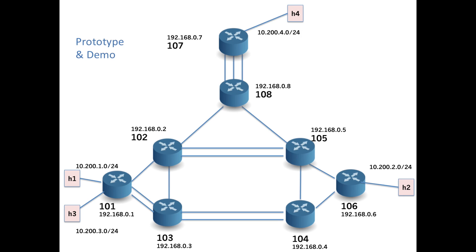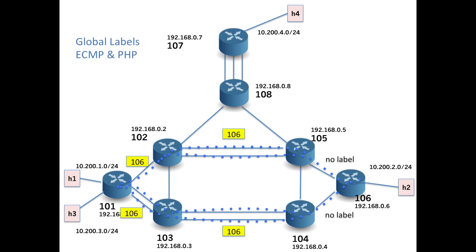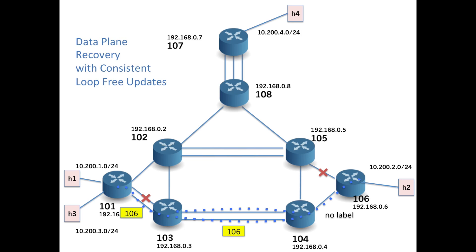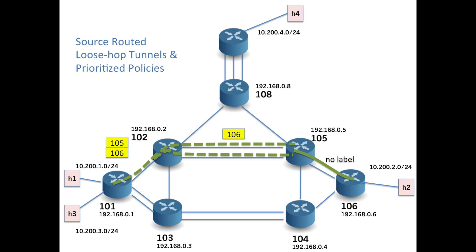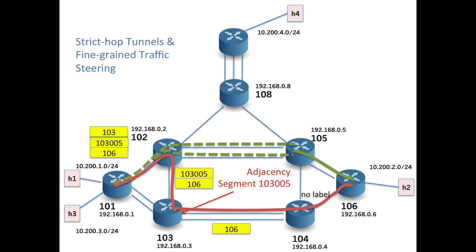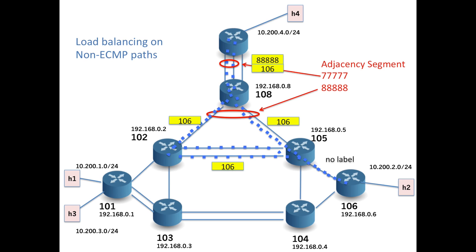We have shown a number of features on the prototype built with Dell hardware and ONOS. We have shown support for global labels and default routing using ECMP and penultimate hop popping. We have also shown that we can recover from data plane failures using consistent loop-free updates from the controller. We have shown source-routed loose hop tunnels that use prioritized policies to direct traffic into those tunnels, and strict hop tunnels which use locally significant adjacency labels to do fine-grained traffic steering, also useful for NFV use cases.